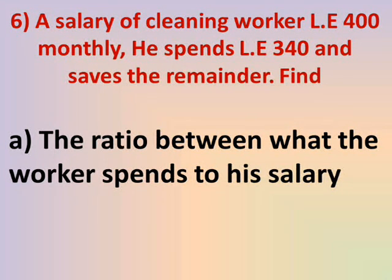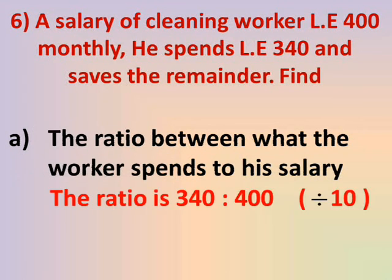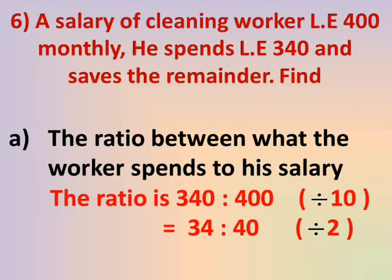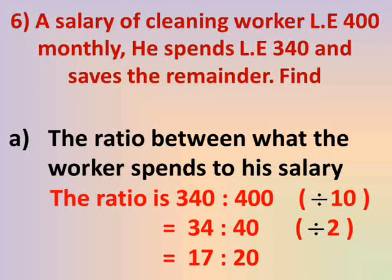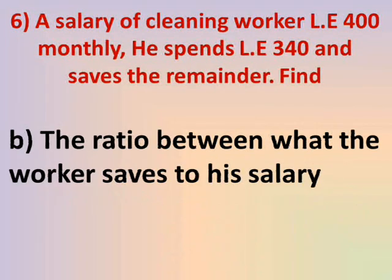Number 6: A salary of a cleaning worker is LE 400. He spends LE 340 and saves the remainder. Find number A — the ratio between what the worker spends to his salary. He spends 340 and his total salary is 400. The ratio is 340 to 400. Dividing both by 10 gives 34 to 40. Both are divisible by 2: 34 ÷ 2 = 17 and 40 ÷ 2 = 20. Ratio is 17 to 20.